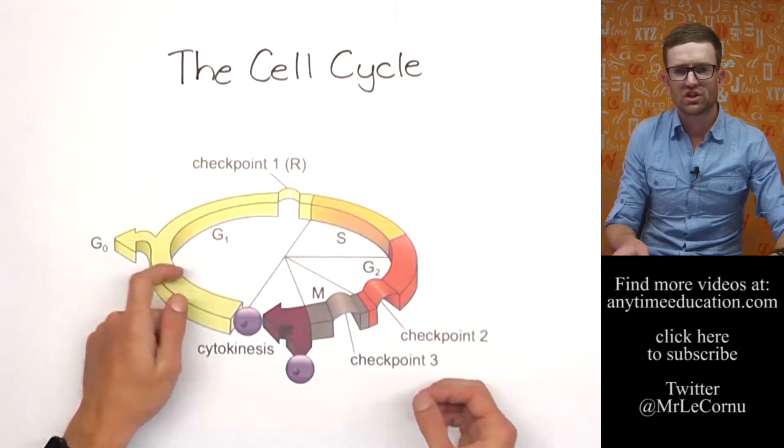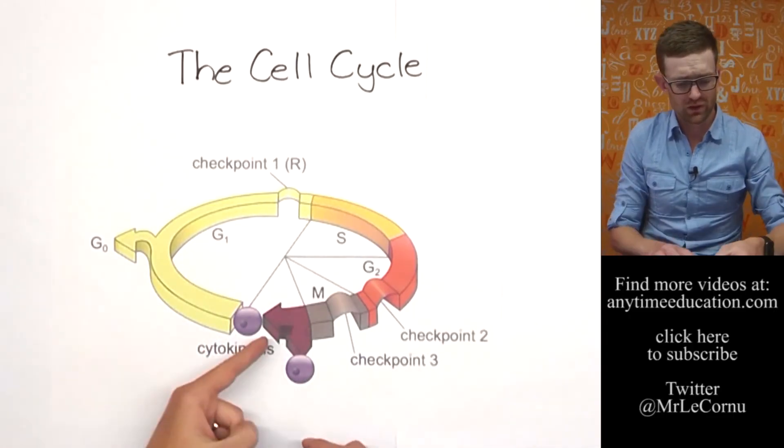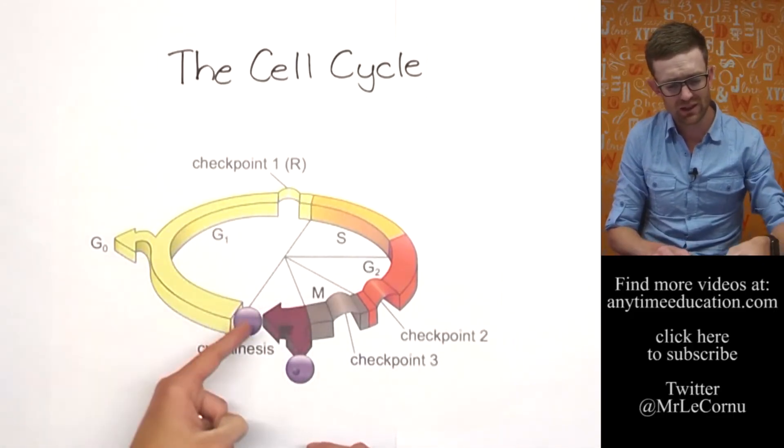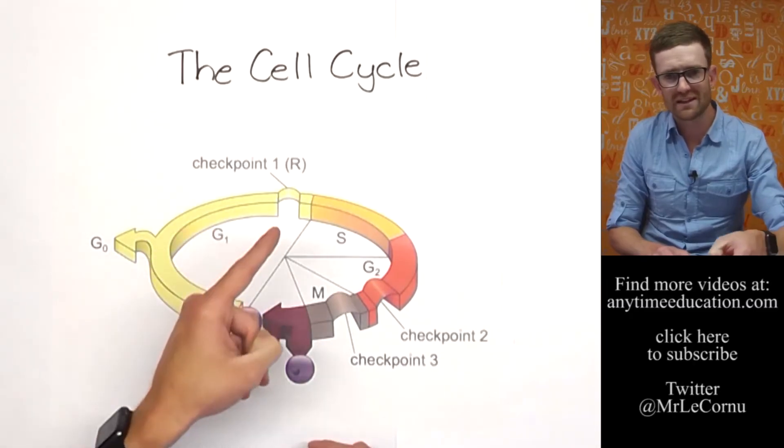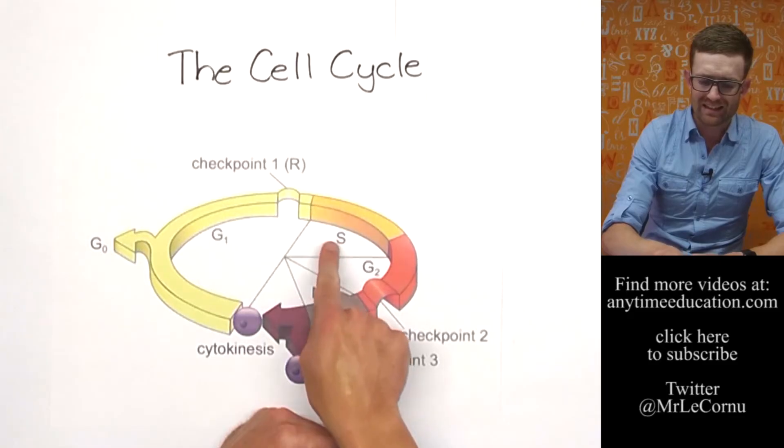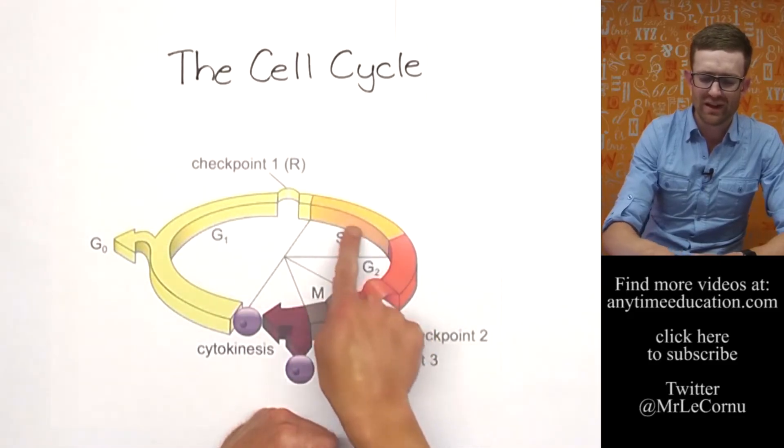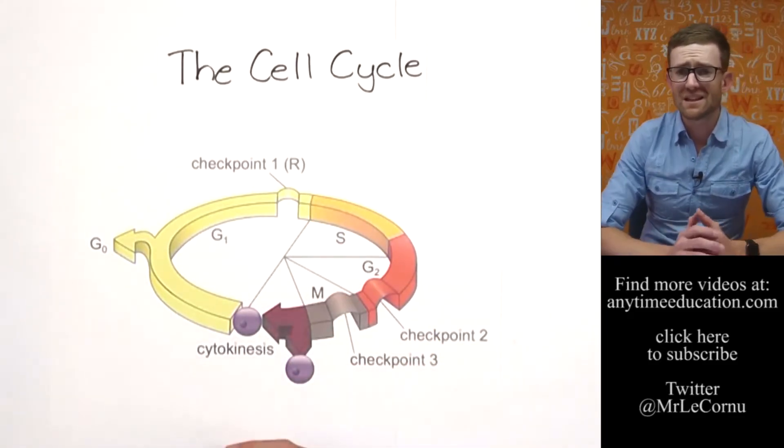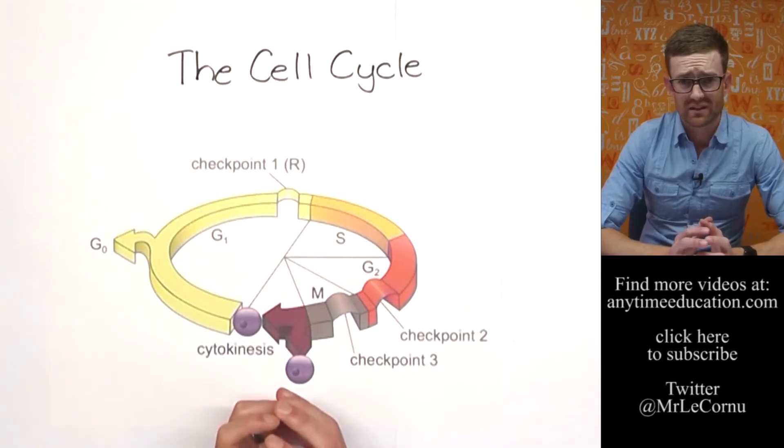First of all, there's this one here, and this is labeled as G1. G stands for growth, so the first part of the cell cycle here is growth phase 1. Then we move over here and we've got S, the S stage or S phase.